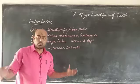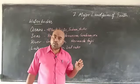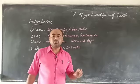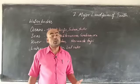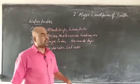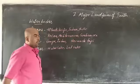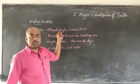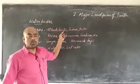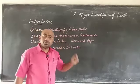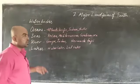Oceans are very large water bodies, and all oceans are saline, that means salty. The large saline water bodies are called oceans. Examples of oceans are the Atlantic Ocean, Pacific Ocean, Indian Ocean, and Arctic Ocean. The Pacific Ocean is the biggest, or the largest, ocean in the world, and the deepest part of the Pacific Ocean is the Mariana Trench.